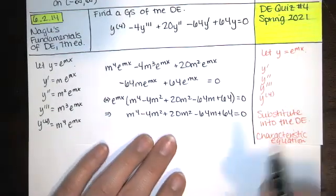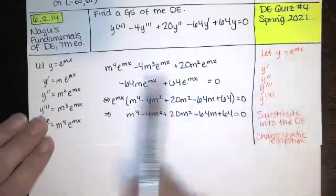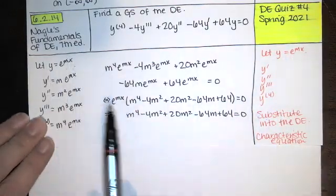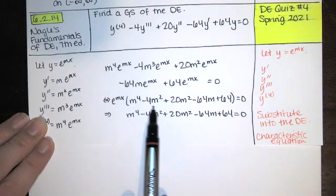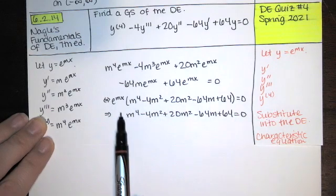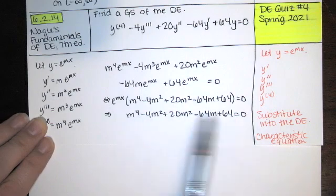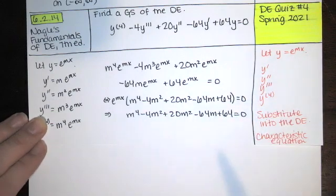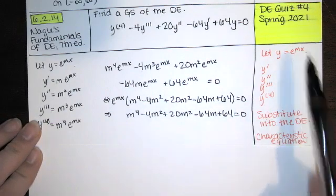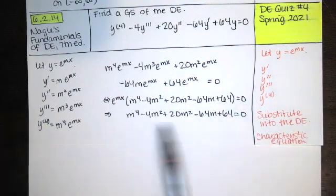In order for e to the mx to be a solution of this equation, m must be a value that satisfies the characteristic equation. So if we can find the values of m that solve this polynomial equation, we'll have the corresponding solutions y by substituting those values of m. We just need to factor this now.